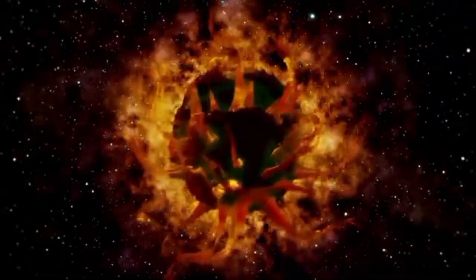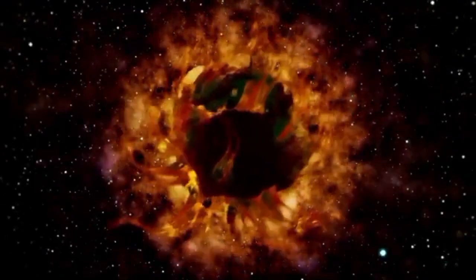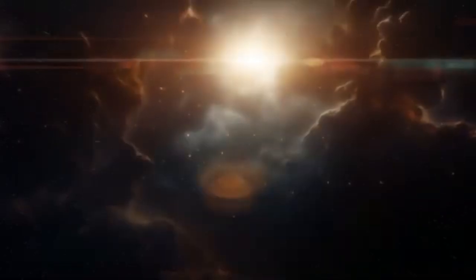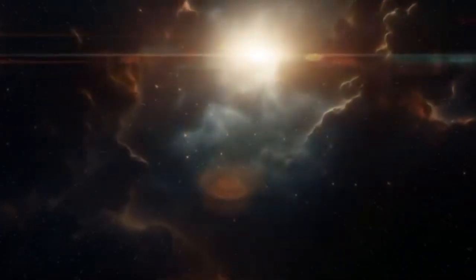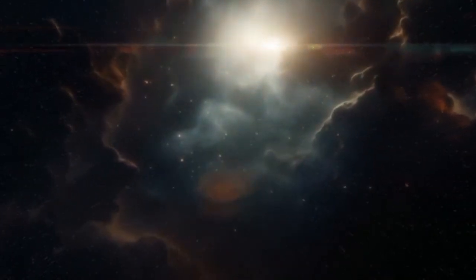This galaxy contains approximately 300 billion stars, each of which probably has its own planetary systems. Our nearest neighboring star Alpha Centauri is 4.3 light-years away, which means that if we were to travel at the speed of light, it would take us 4.3 years to get there.